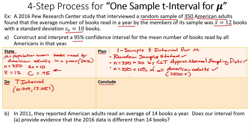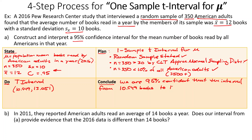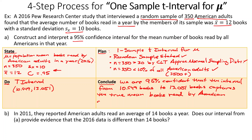For Conclude: we are 95 percent confident that the interval from 10.949 books to 13.051 books captures the true mean number of books read by American adults in 2016.